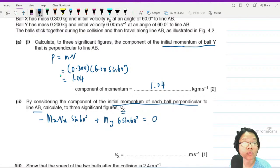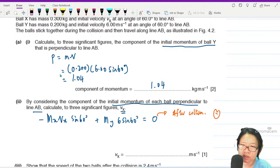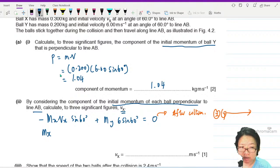This must be zero because after collision X and Y travel in the horizontal direction only.